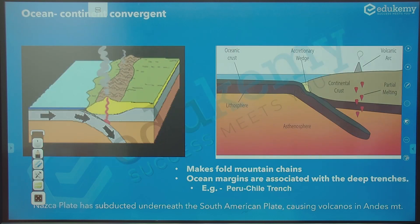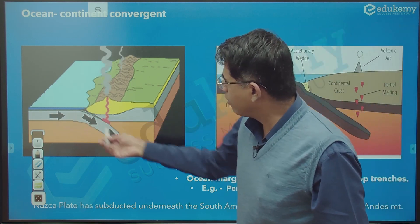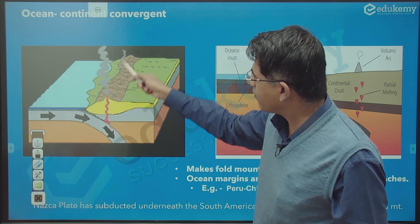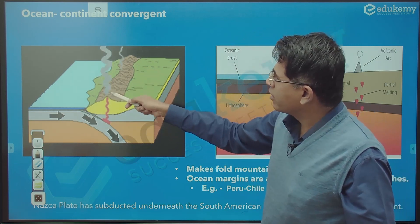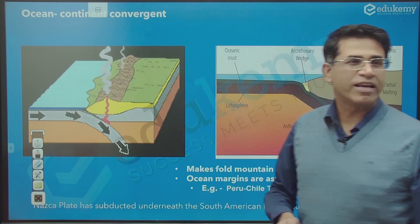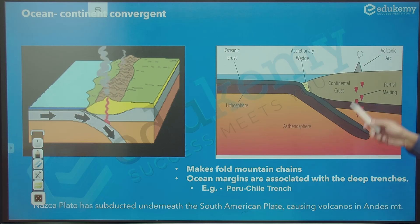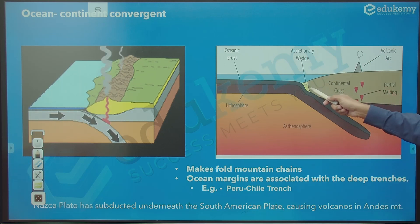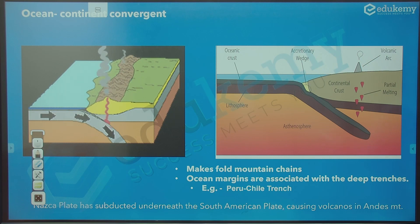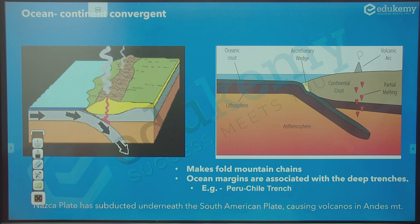In ocean-continent convergence, the ocean plate goes down and scrapes underneath the continent — this produces the Andes type of mountains. The accretionary wedge or prism forms, and magma rises creating volcanic eruptions on the mountains. Examples include Chimborazo, Cotopaxi, and Ojos del Salado.